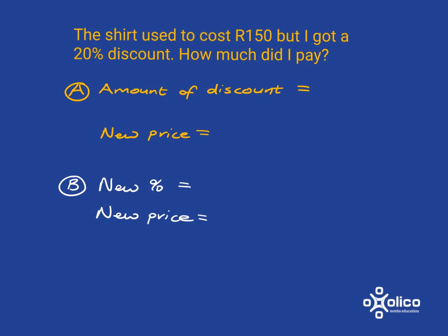We have a very similar story if we're talking about the price coming down. If we had a shirt that cost 150 and I got a 20% discount and want to know how much I paid, I'm talking about taking 20% off the price. We can again do it in two ways. In the first way, we work out the amount of the discount: 20% of 150, which we just worked out is 30 rand. So the difference here is that I need to take that 30 rand away from the original to get my new price.